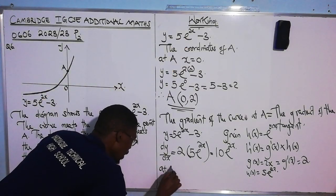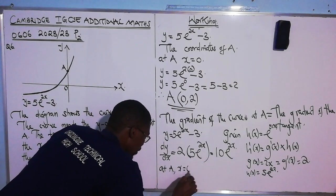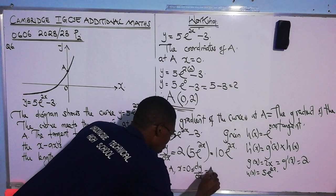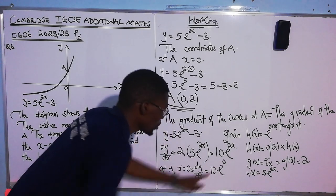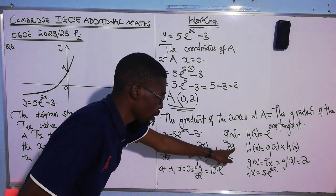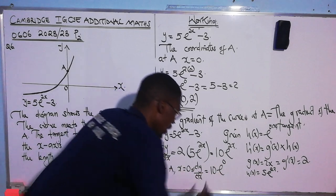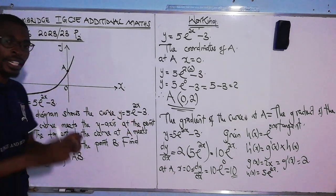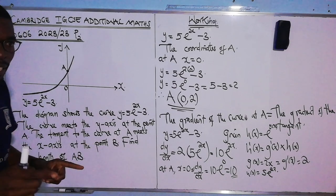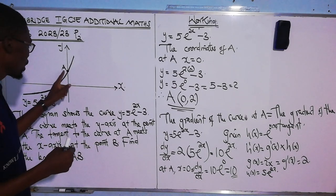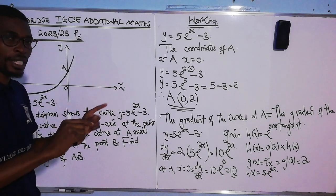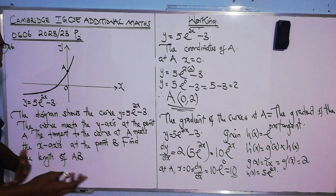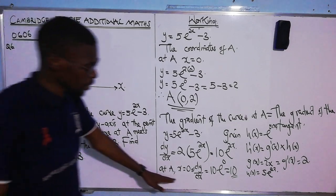At A, where x = 0: dy/dx = 10e^(2×0) = 10e^0 = 10 × 1 = 10. So the gradient of the curve at A is 10. Because A is the point of tangency, the gradient of the curve at A equals the gradient of the tangent at that point. So the gradient of the tangent is 10.